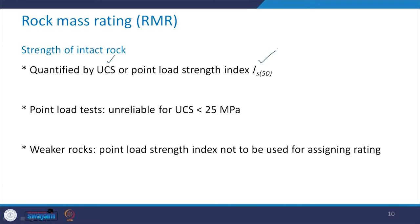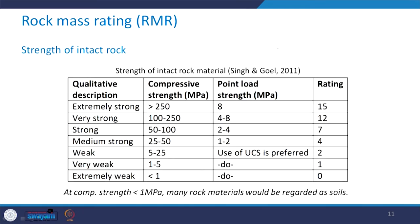Coming to the strength of the intact rock, it is quantified by UCS or Point Load Strength Index. Point load test results are unreliable for UCS less than 25 MPa for assigning a rating to the strength of intact rock. For weaker rocks, point load strength index should not be used for assigning the rating; instead, we have to rely on the value of UCS. A table is given where the first column gives qualitative description, the second the compressive strength, the third the corresponding point load strength in MPa, and the last column gives the rating.